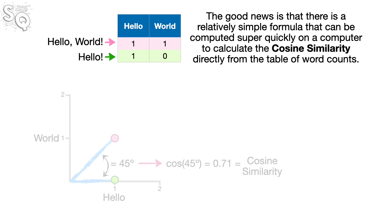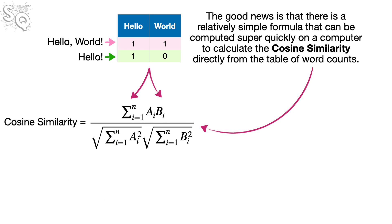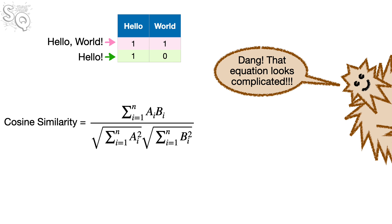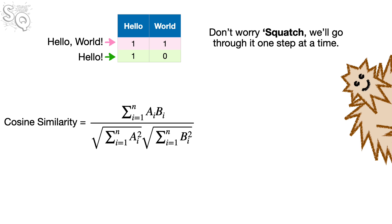The good news is that there is a relatively simple formula that can be computed super quickly on a computer to calculate the cosine similarity directly from the table of word counts. Dang! That equation looks complicated! Don't worry, Squatch! We'll go through it one step at a time. Thanks!